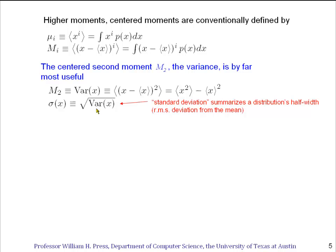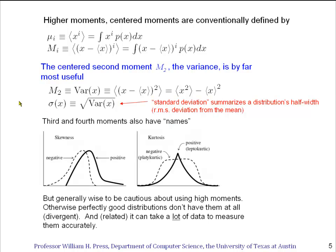The square root of the variance is often defined as the standard deviation, often written σ(x). And that summarizes in the same units of x, what is the rough half width or RMS root mean square deviation from the mean of the distribution. Half width means from the center to the side. Full width means from the left side to the right side in terms of how the language is used.